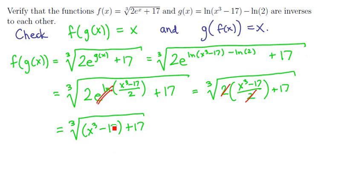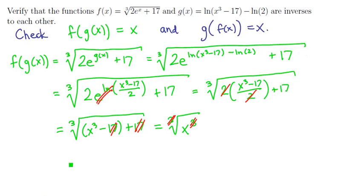Those parentheses don't need to be there, and that means that the 17 and the negative 17 cancel, and so what we've got is the cube root of x cubed. But then these two things cancel, and so what we're left with at the end is just x. So the first condition checks.